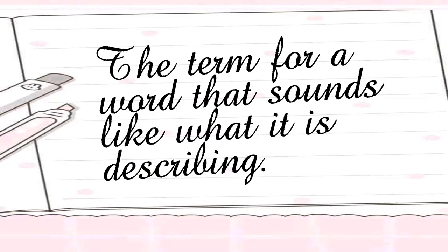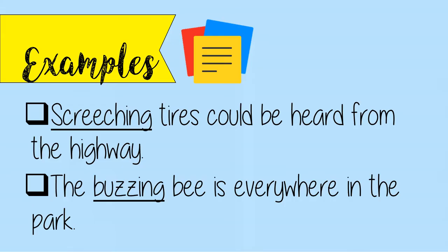Onomatopoeia, sometimes called echoic words, is the term for a word that sounds like what it is describing. Example: screeching tires could be heard from the highway. In this example, the word 'screeching' makes the readers imagine the sharp sound from a vehicle that suddenly stopped.